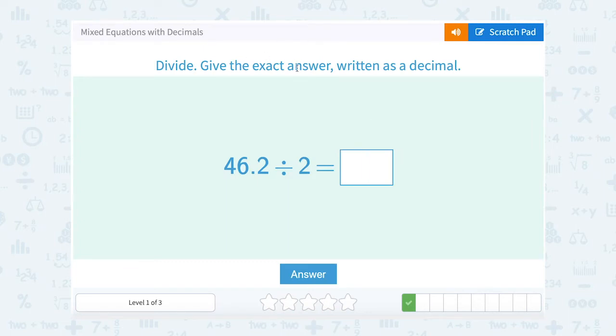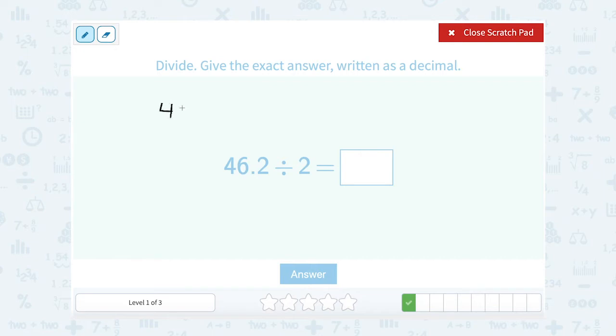Divide, give the exact answer written as a decimal. They want the exact answer, not a rounded off number. So I'm going to write it this way, 46.2 divided by 2. I'm going to think of this as a long division problem. When you have a decimal here, notice there's no decimal on the 2, just on the 46.2. So I'm going to just line up that decimal right above it, and then I don't have to think about it. I'm going to work out my problem, like 462 divided by 2, and then that decimal point is going to be there to make sure that my answer is adjusted appropriately.